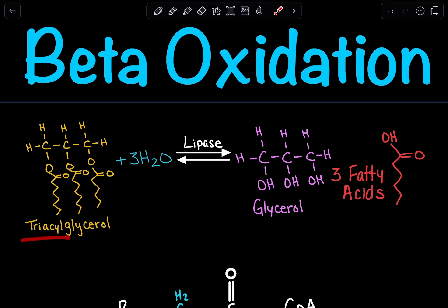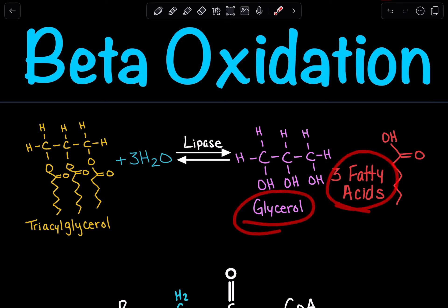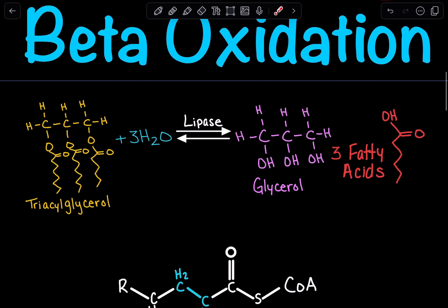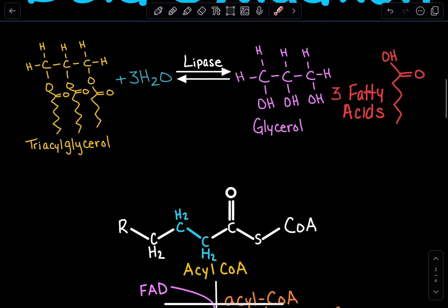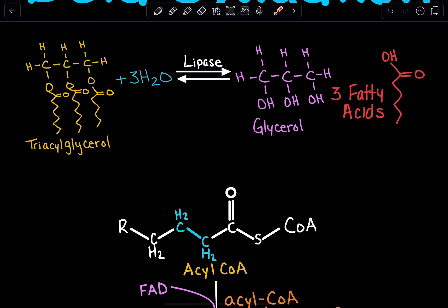We have our triacylglycerol, or whatever our lipid may be, and we break it down into its components via a lipase enzyme into glycerol and fatty acids. These fatty acids are then going to be broken down for energy. Glycerol can also be broken down for energy, but here we are concerned with fatty acids.